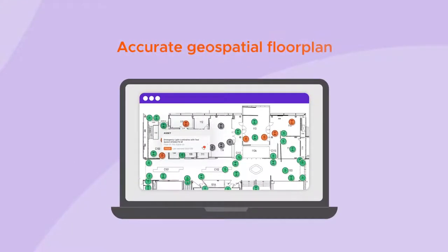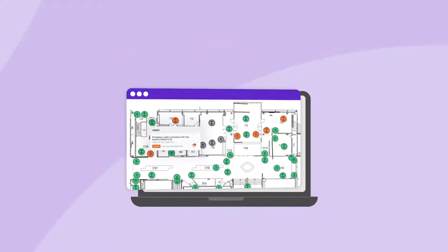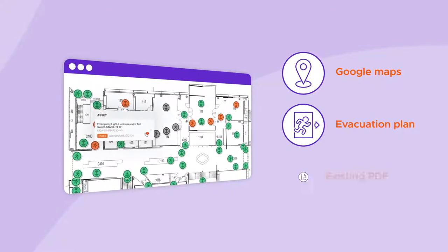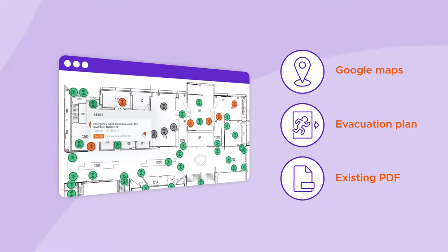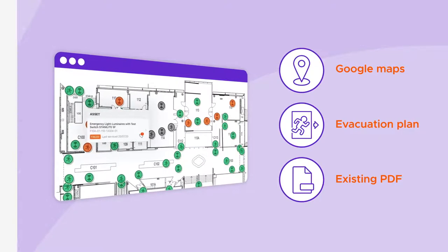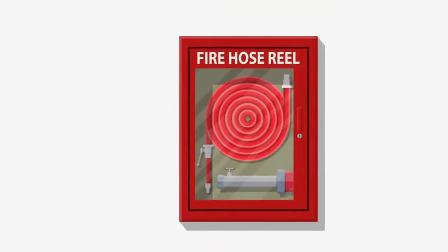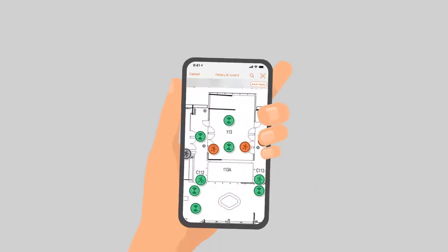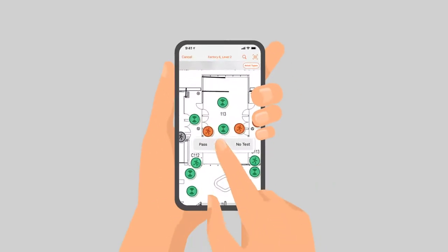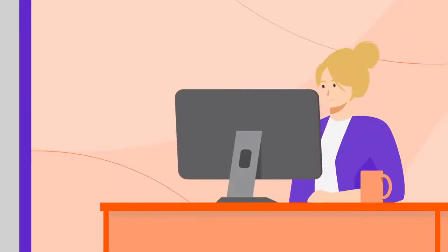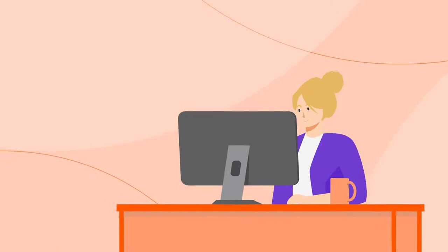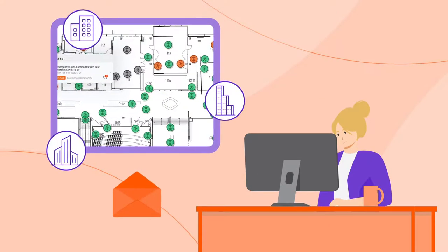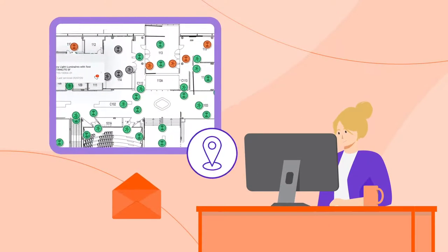Easily create an accurate geospatial floor plan from Google Maps, an evacuation plan, or an existing PDF, and map all of your assets with ease. Finding the right asset on site is made easy, meaning your techs will spend less time looking for assets and more time getting their job done. You'll also impress your customers with a visual representation of all their assets across all their buildings on a geospatial map.